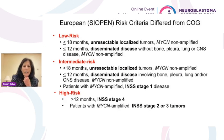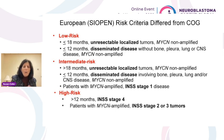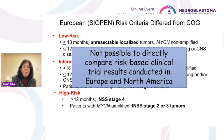In Europe, the risk criteria differed from COG. Instead of using INSS stage, terms like unresectable, localized, or disseminated disease were used for low-risk and intermediate-risk disease. High-risk was defined as greater than 12 months with INSS stage 4, as well as patients who had MYCN amplification with stage 2 or 3 tumors. Because of these differences in criteria, it was not possible to directly compare risk-based clinical trials conducted in Europe and North America.